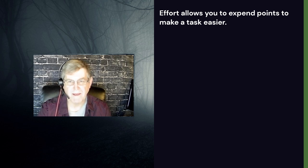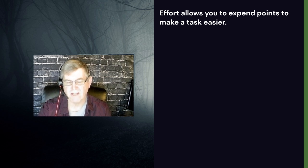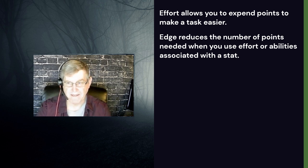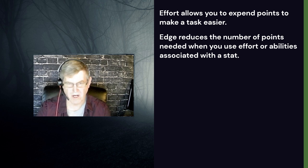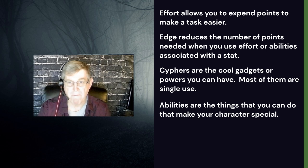Effort allows you to expend points from a stat to make a task easier. For example, you could spend three points from might to increase your chance of hitting with a sword — we call that easing the task. Edge allows you to reduce the number of points needed when you use effort. If you're a warrior, your edge is most likely in might, so using strength to ease a task might cost two points instead of three. Ciphers are like cool gadgets or powers — most are single use. Abilities are things that make your character special, and characters have tiers, similar to levels, unlocking different abilities at each tier.